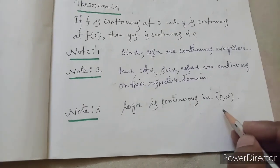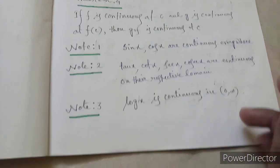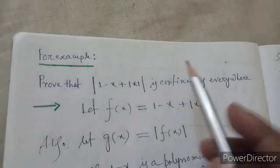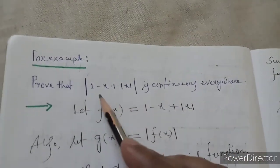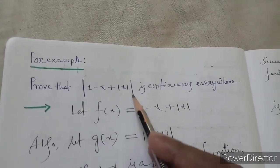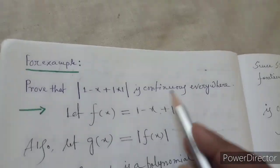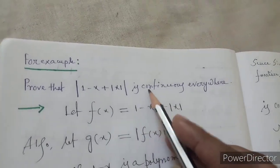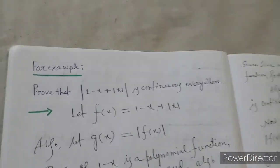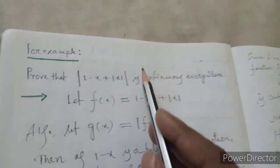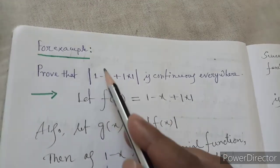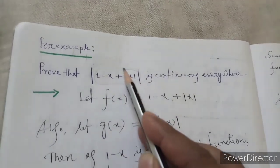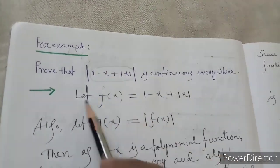Note three — super important: log x is continuous on the open interval (0, infinity). For example, prove that mod of (1 minus x plus mod x) is continuous everywhere.